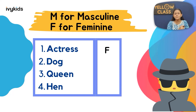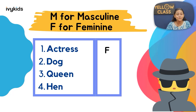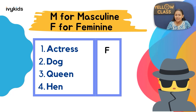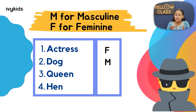Moving on to the second question: the word is dog — quickly type M or F. If you think dog is masculine, put M; if feminine, put F. The correct answer is M — dog is masculine.